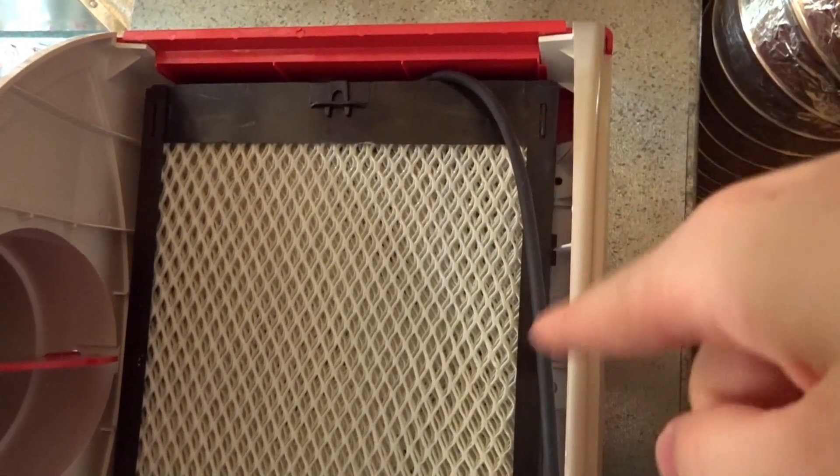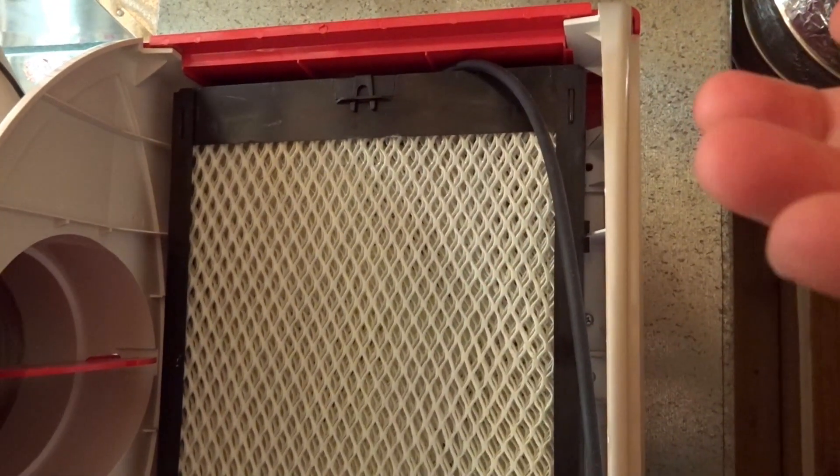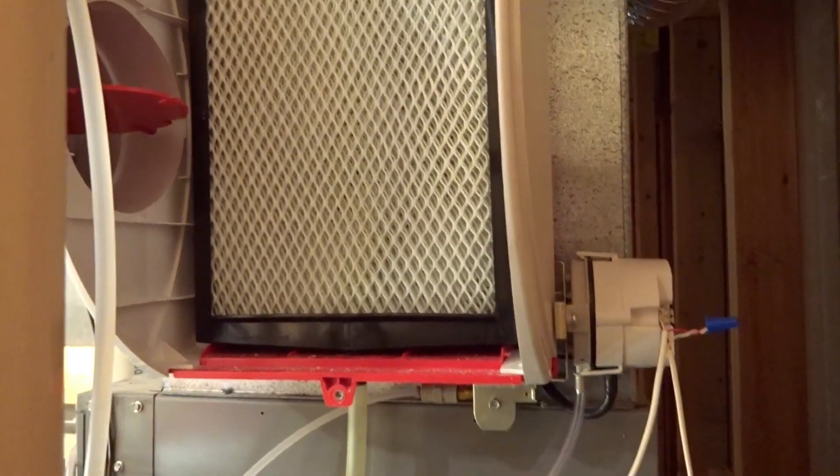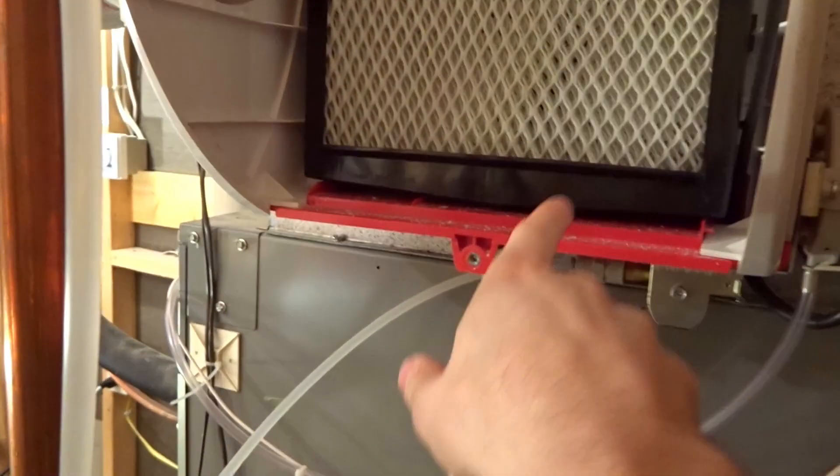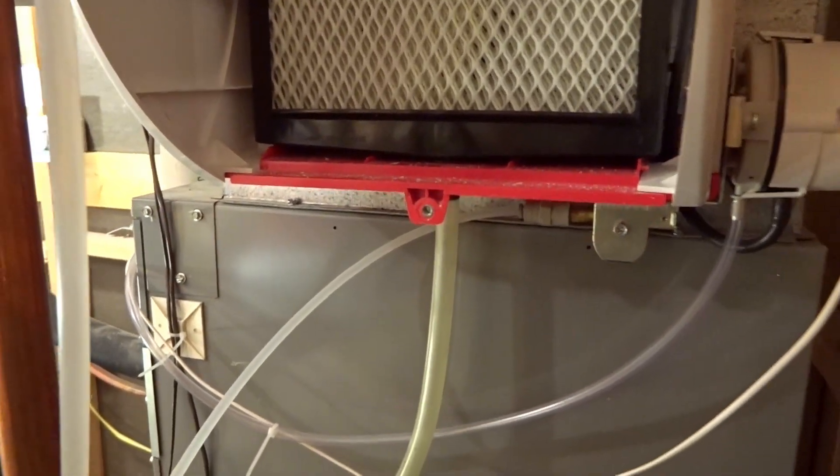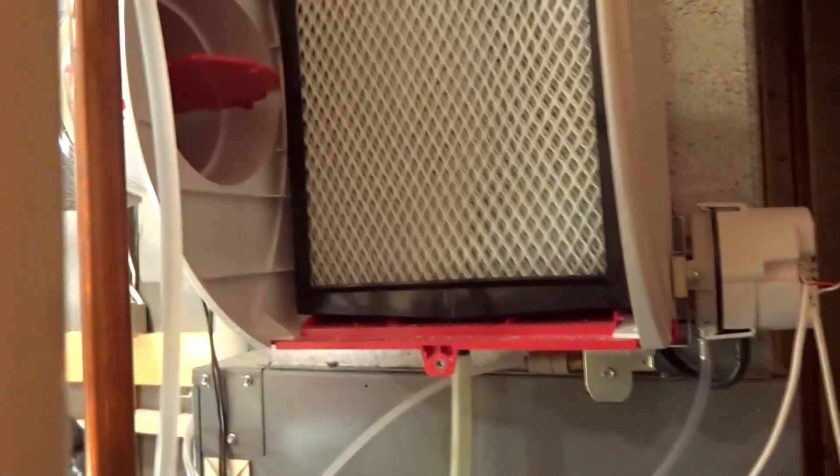So when you want to change the pad, this little frame is just four sections that comes apart—very self-explanatory. You just swap it out, takes you two minutes tops. There's really nothing to it. You get a little bit of dust and stuff down here, and that's really all I do. So I clean that up maybe once a year, and it's good to go.